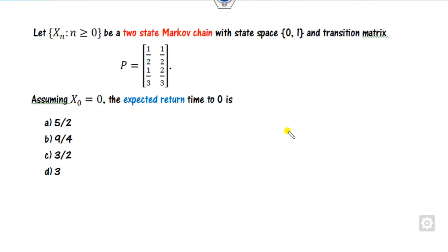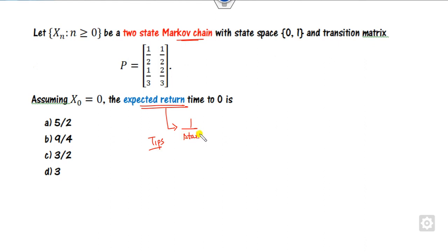Look at the second question, which is related to the Markov chain, and your target is to find the expected return time to state zero. Take note of this tip: whenever they ask about the expected return time, it is nothing but the reciprocal of the stationary probability. There are two states, zero and one, and your target is to find the stationary probabilities, with the answer at state zero.